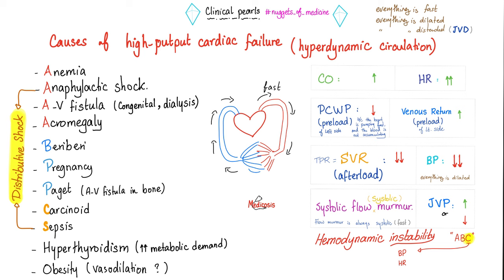Paget's disease can create AV fistulas in bones leading to high output cardiac failure — hyperdynamic circulation where everything is fast and dilated. This hyperdynamic circulation is not unique to Paget's; it also occurs in anemia, anaphylactic shock, any AV fistula, acromegaly, beriberi, pregnancy, carcinoid, sepsis, hyperthyroidism, and obesity.